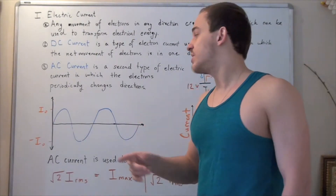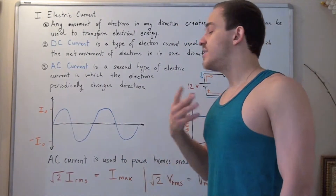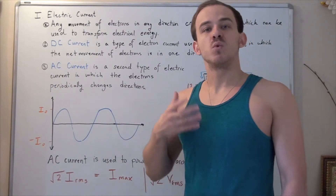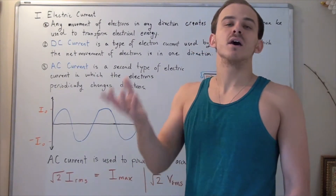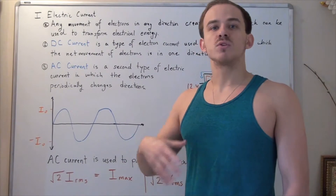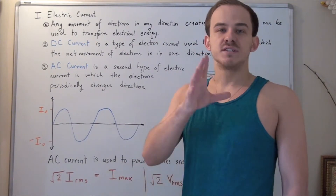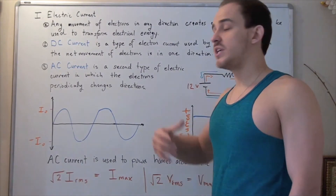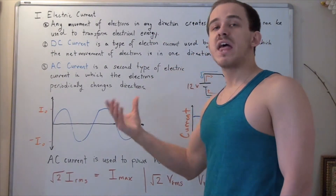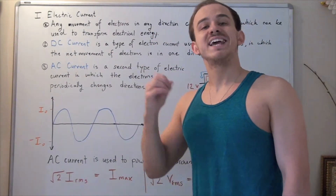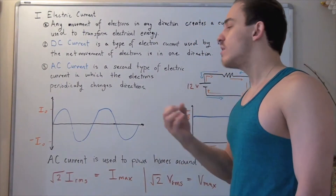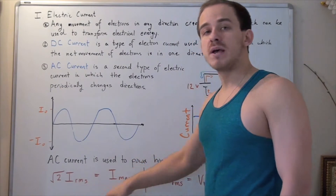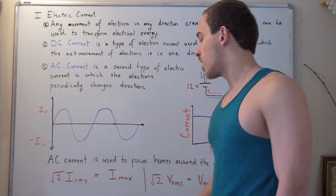Therefore, instead of taking the average of these values, they take the root mean square. We already spoke about what the root mean square was in another lecture, so if you don't know what the root mean square is, visit that lecture. Taking the root mean square basically gets rid of the negative values, so now they can charge us by using the I-RMS, or the current root mean square.